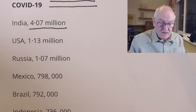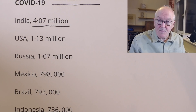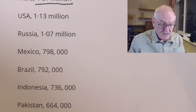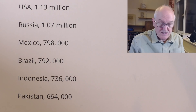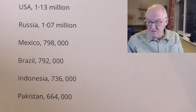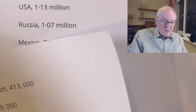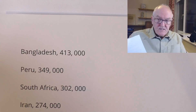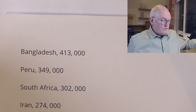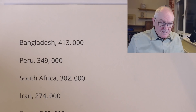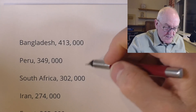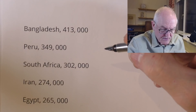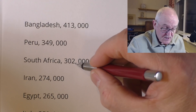Mexico had 798,000. Brazil had 792,000. Indonesia had 736,000. Pakistan had 664,000. Bangladesh had 413,000. Peru had 349,000. South Africa had 302,000 — a pretty high death rate for South Africa.